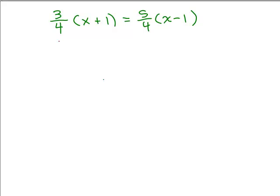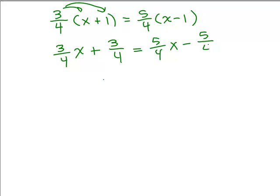So first let's do it by doing the distributive property on each side. So you have 3 fourths times x plus 3 fourths times 1 because you have to distribute it to both those numbers. Equals 5 fourths times x minus 5 fourths times 1. So now we have done our distributive property.